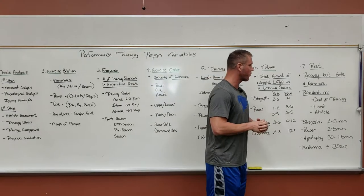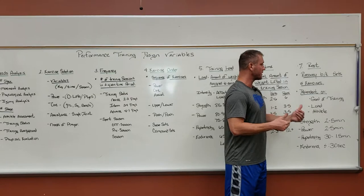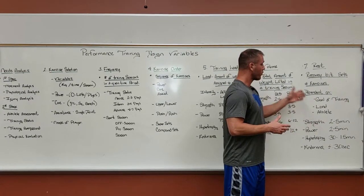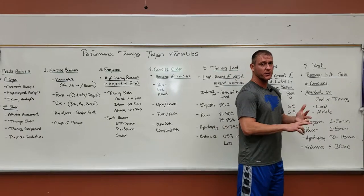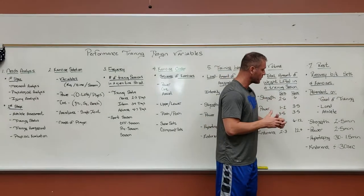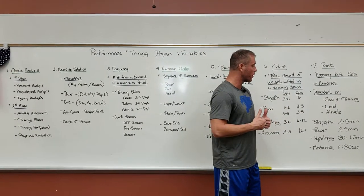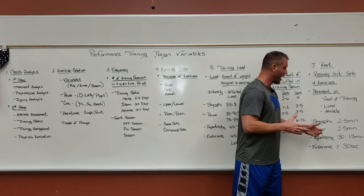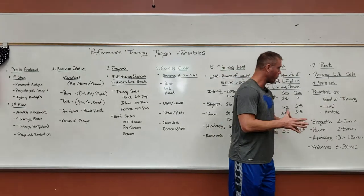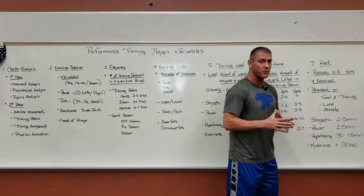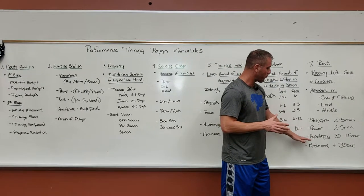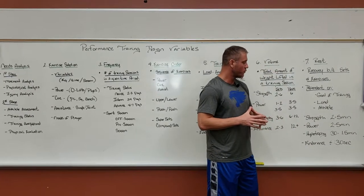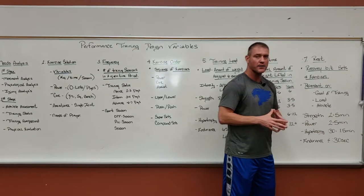Last — and probably the most vital — is rest: the recovery between sets, exercises, and training sessions. This depends on the goal of training, the load, and the athlete's status. For strength development, we need adequate rest — typically two to five minutes. For power work such as plyometrics and Olympic lifting, also two to five minutes. For hypertrophy, 30 seconds to a minute and a half. For endurance, if we're trying to build an aerobic base, possibly 30 seconds or less.